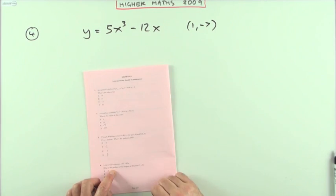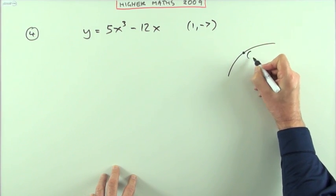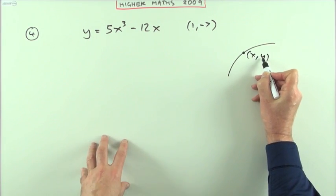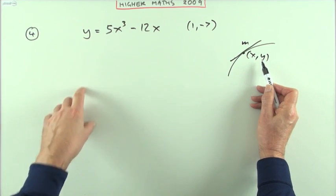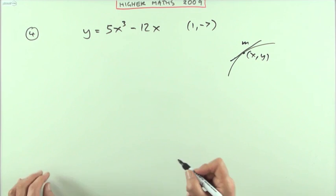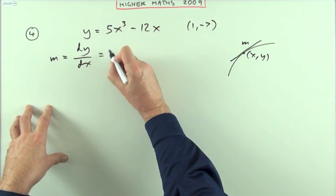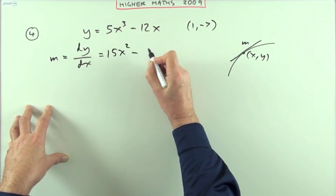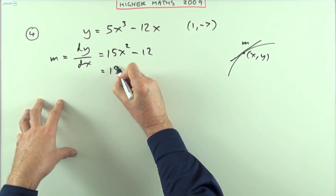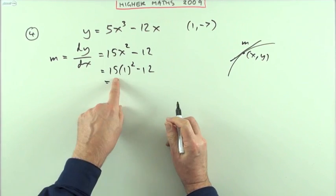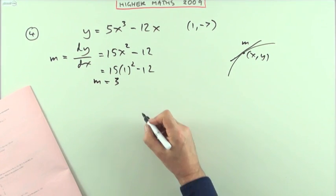Number four: a curve has this equation. What's the gradient of the tangent at this point on the curve? At every single point on a curve there are three numbers: the x coordinate, the y coordinate, and the gradient of the tangent. The gradient will be the rate of change — that'll be the derivative. So differentiate it: multiply by the power — three times five is 15 — take one off the power; the linear term becomes just 12. If the x coordinate is 1, feed it in: 15 times 1 squared minus 12, which is 15 take away 12 = 3. So the gradient is 3, which is answer C.